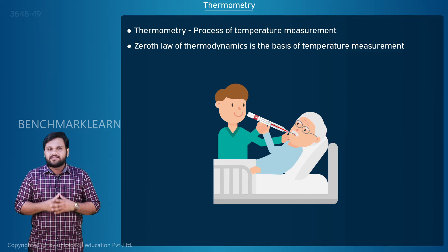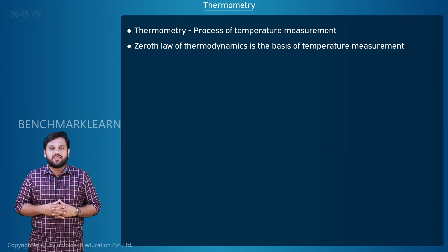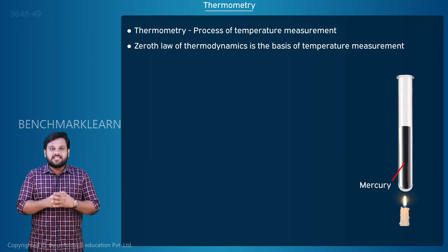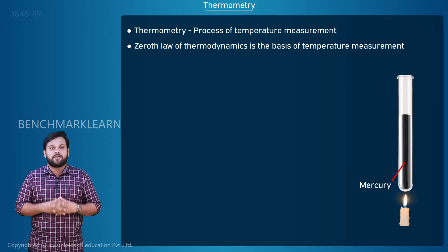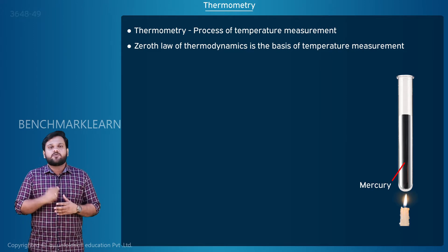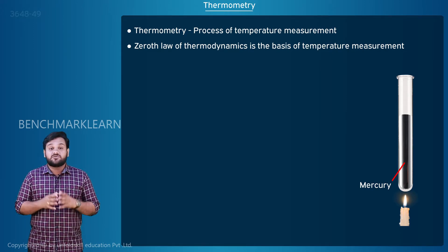You know, a thermometer consists of a liquid, generally mercury. When mercury is heated, it expands and there is a noticeable change in the volume. We use this property of thermal expansion to develop the thermometer.